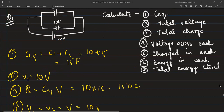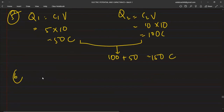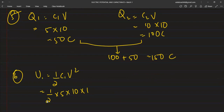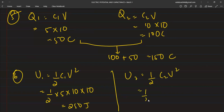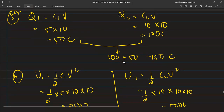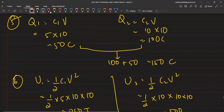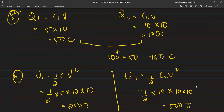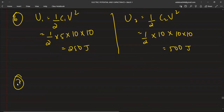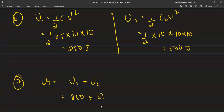Charge is capacitance into potential. First capacitance is 5, so Q1 equals 5 into 10 equals 50 coulomb. Second charge equals C2 into V, which is 10 into 10 equals 100 coulomb. You can confirm: 100 plus 50 equals 150 coulomb, which was the total. Energy in each: U1 equals half C1 V squared, equals half times 5 times 10 times 10 equals 250 joules. U2 equals half C2 V squared equals half times 10 times 10 times 10 equals 500 joules. Total energy: U1 plus U2 equals 250 plus 500 equals 750 joules.